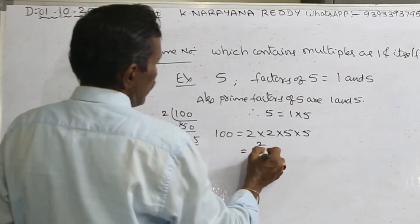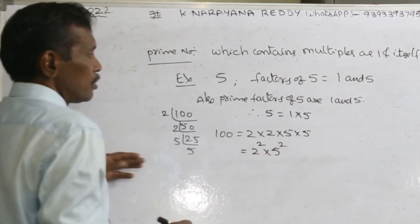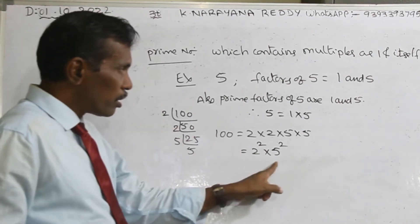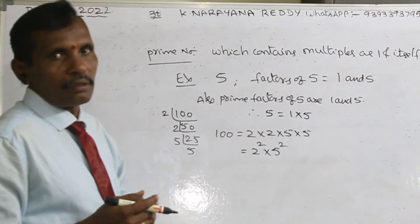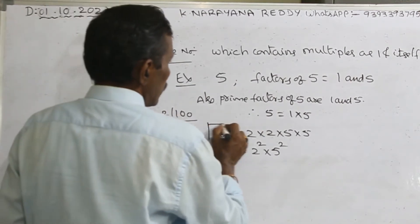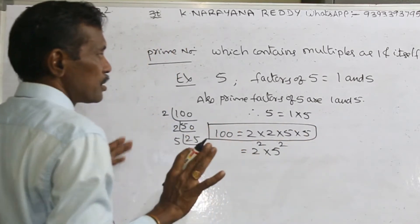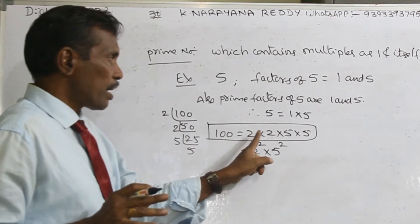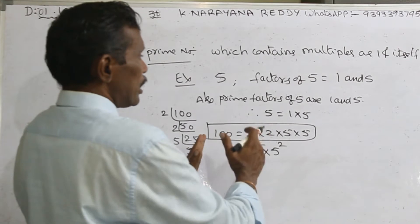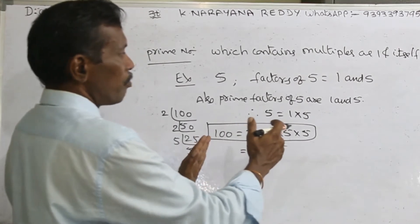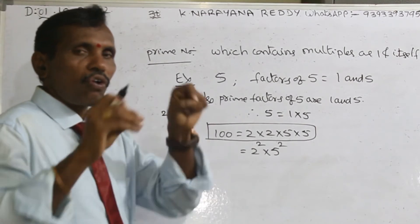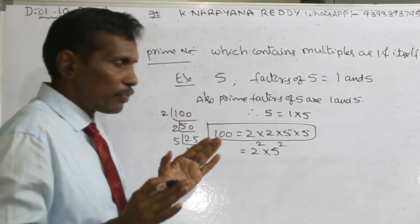That means 100 equals 2 times 2 times 5 times 5, which is 2 squared times 5 squared. This is a whole number. This process is called factorization of prime numbers — prime factorization of a whole number.